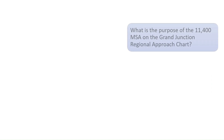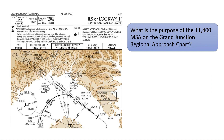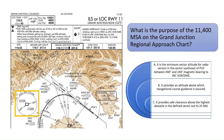What is the purpose of the 11,400 MSA on the Grand Junction Regional approach chart? See the minimum safe altitude radius on the left of the chart with the number 11,400. According to Chapter 1 of the Instrument Flying Handbook and Chapter 5 of the Aeronautical Information Manual, MSA — minimum safe altitudes — are expressed in feet above mean sea level and normally have a 25 nautical mile radius. They provide 1,000 feet of clearance over all obstructions in a designated sector but do not necessarily assure acceptable navigation signal coverage. The correct answer is C.